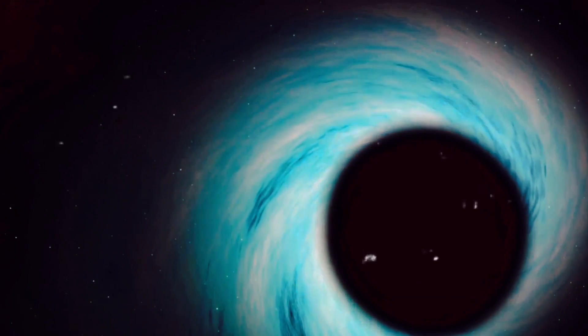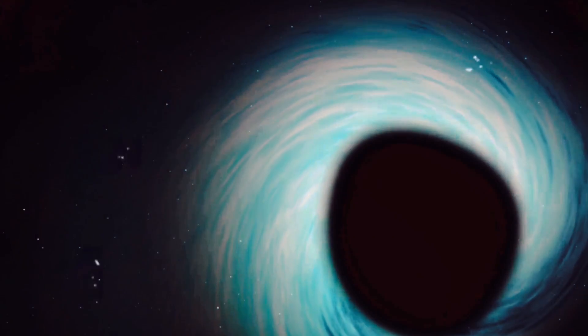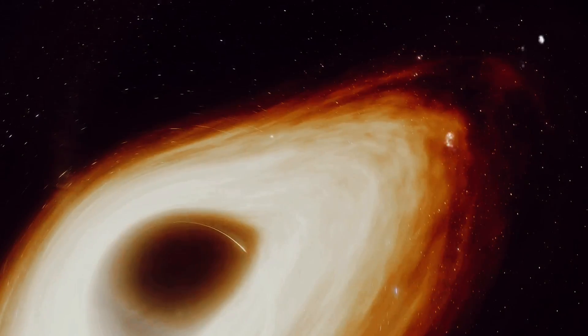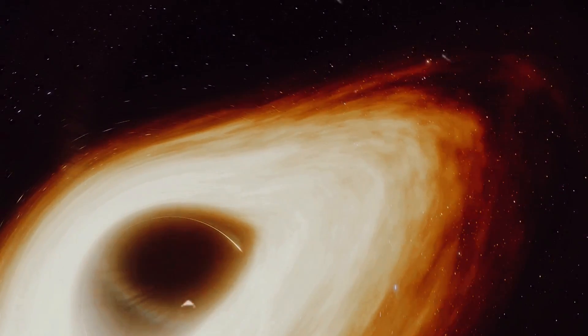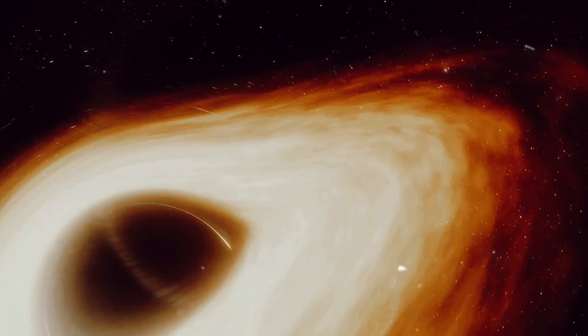These singularities are shrouded by an event horizon, a boundary beyond which nothing, not even light, can escape the gravitational pull. This is why we call them black holes. They are invisible to our eyes, yet their presence is felt by the distortion they cause in the space-time fabric.